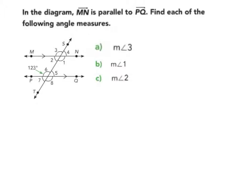So let's start with part A, the measure of angle 3. I see here that I do have one angle measure that's given to me. Angle 6, which is 123 degrees, is given to me.